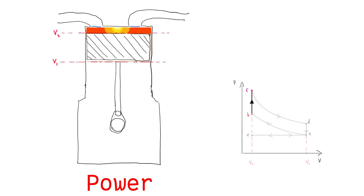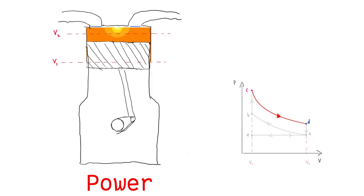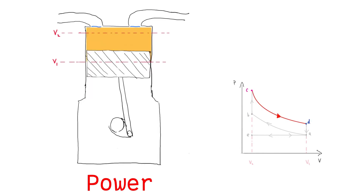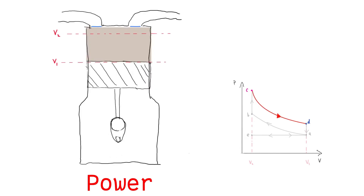Third is the power stroke. Once the cylinder is maximally compressed, the spark plug ignites the fuel-air mixture. Heat is added through the ignition, rapidly increasing the pressure in the cylinder. The gas undergoes a rapid adiabatic expansion, which pushes the piston down, adding momentum to the crankshaft.